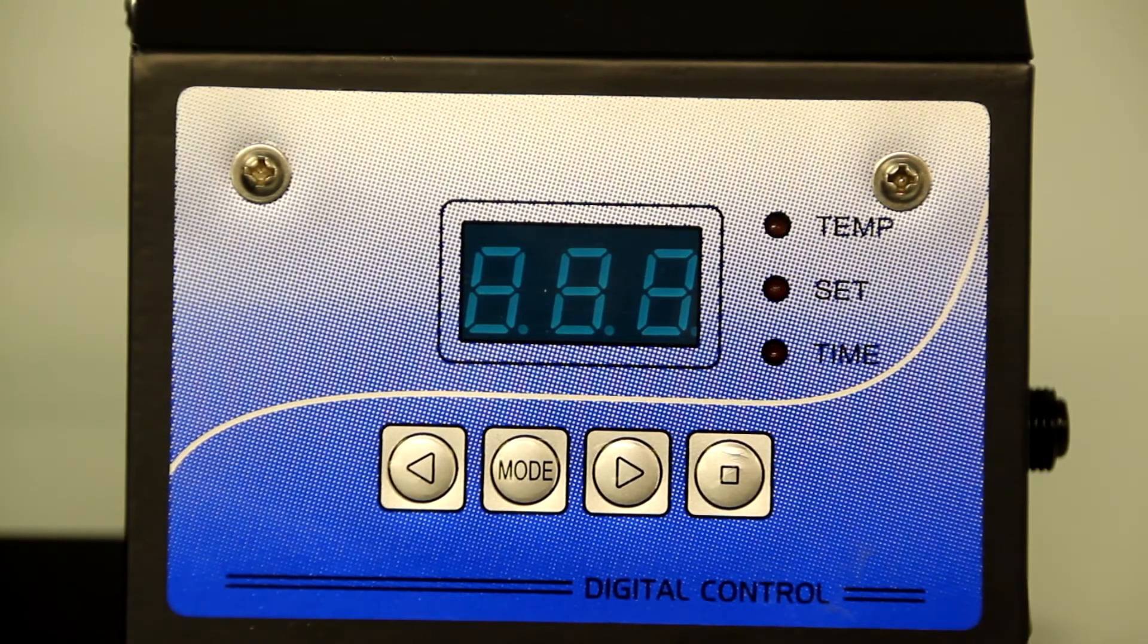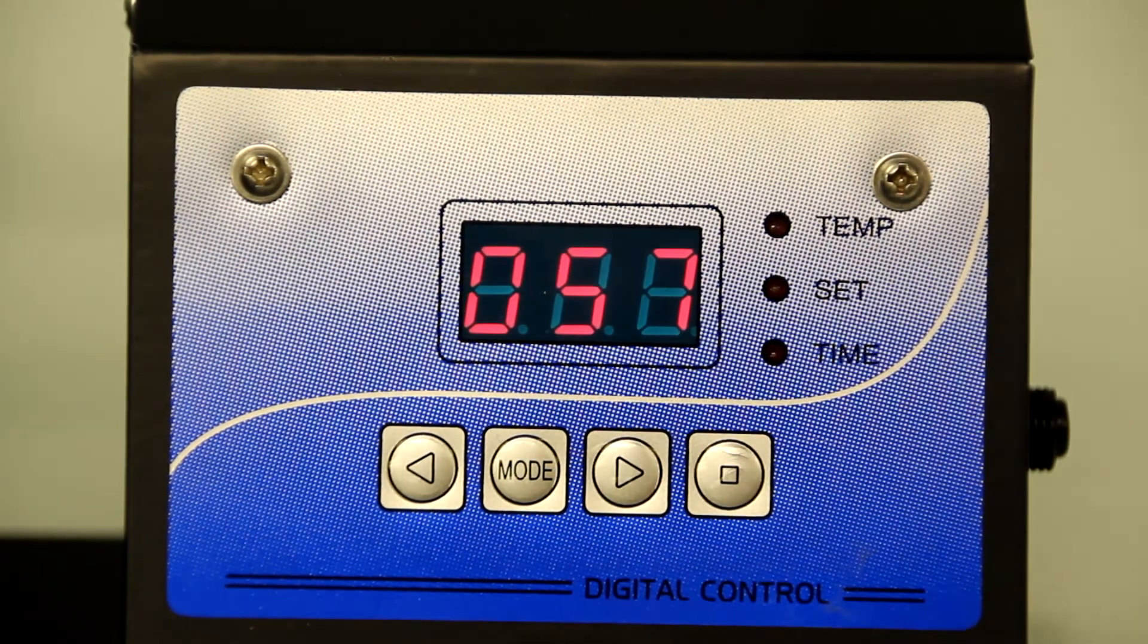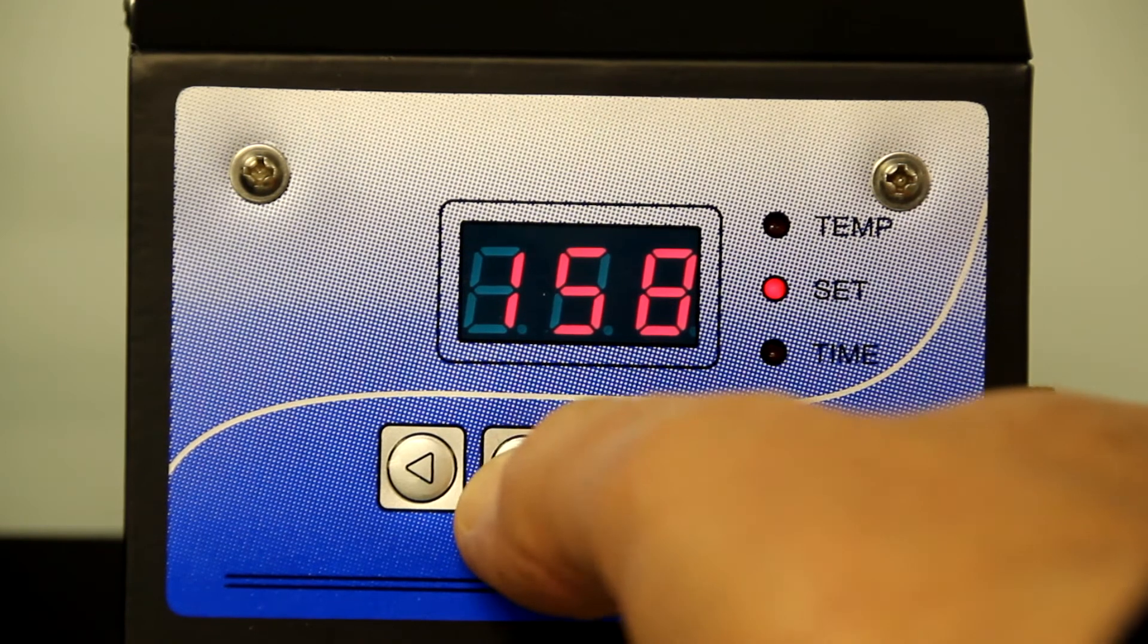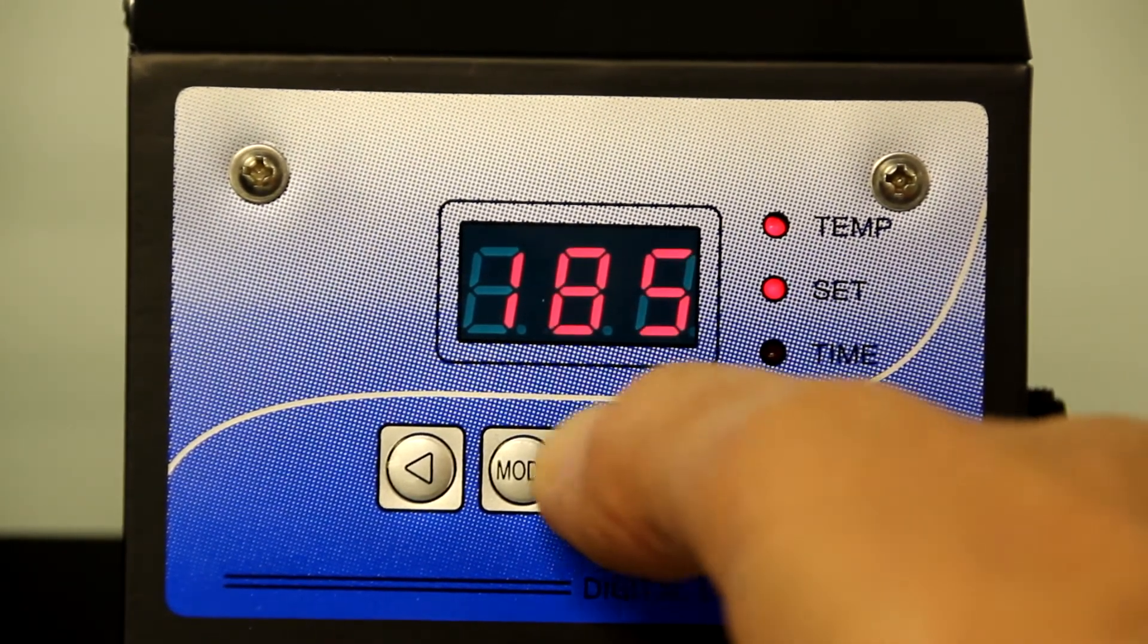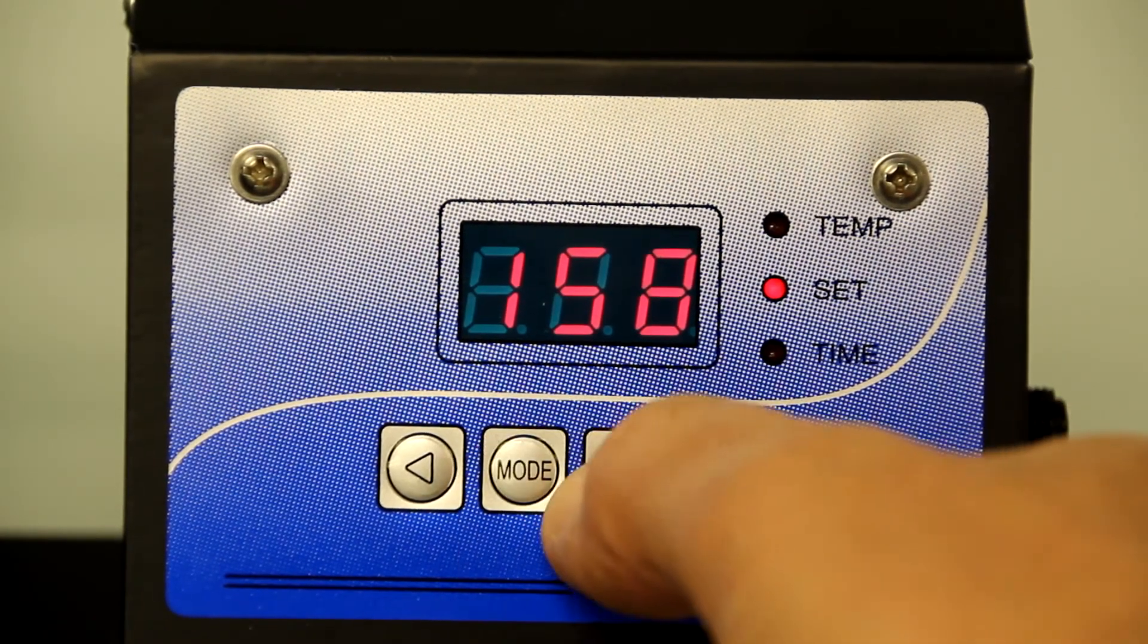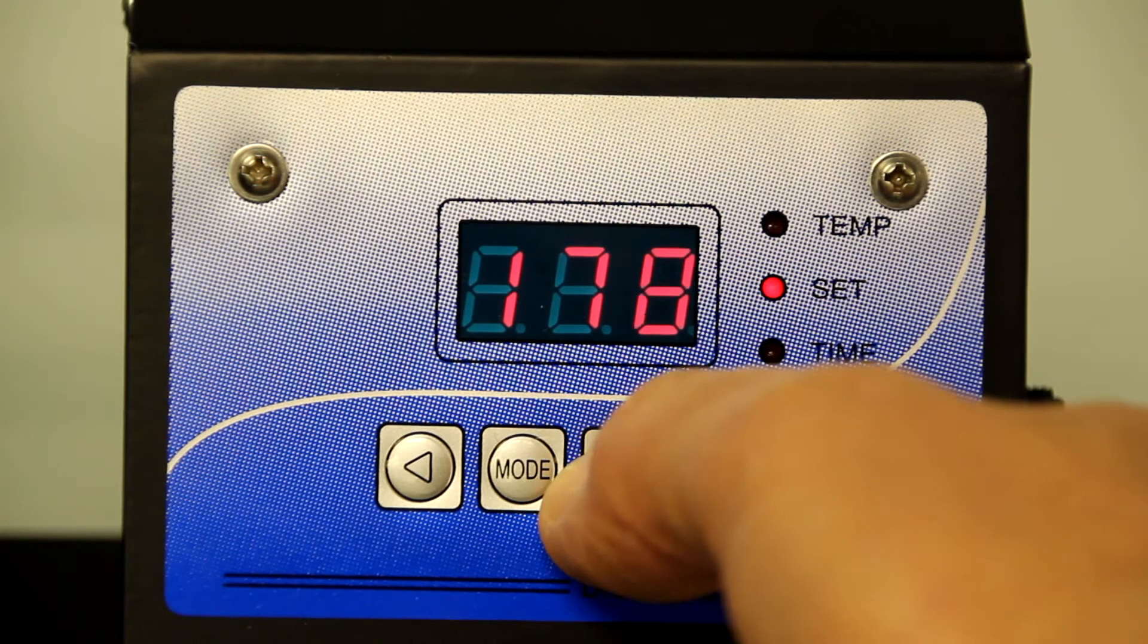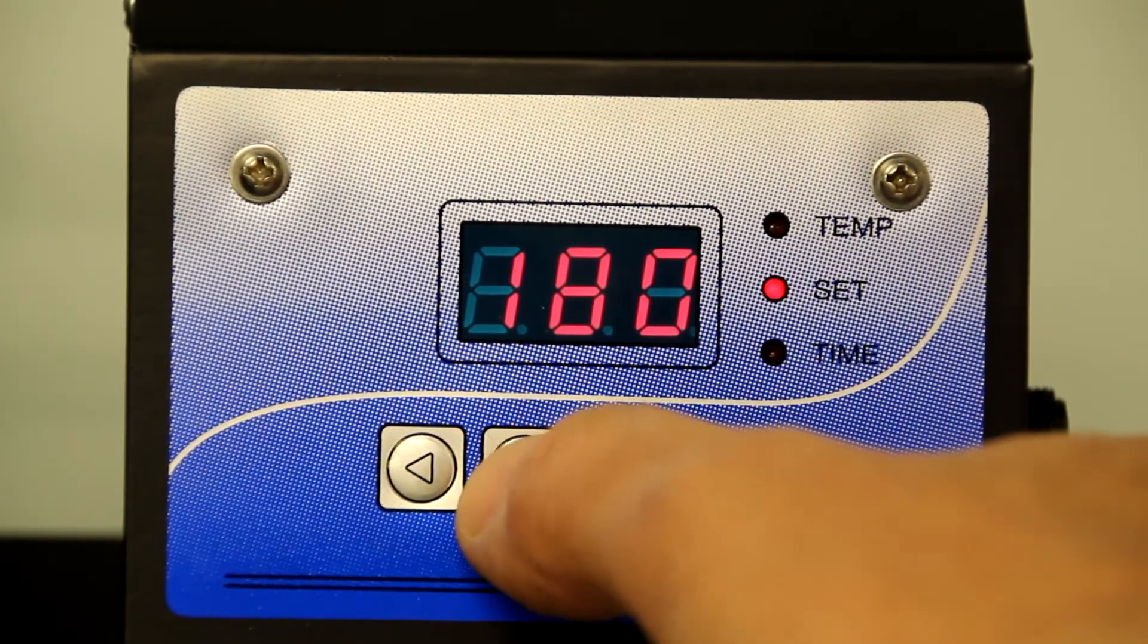The next step is to set the temperatures and time of the mug press. Turn on the press and use the mode button to adjust the temp set to 185 degrees C and the set to 180 degrees C. The time should be set for 15 seconds.